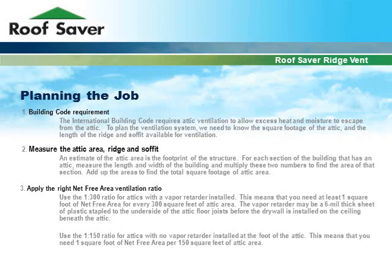Use the 1 to 300 ratio for attics with a vapor retarder installed. This means you need at least one square foot of net free area for every 300 square feet of attic area. The vapor retarder may be a 6mm thick sheet of plastic stapled to the underside of the attic floor joists before the drywall is installed on the ceiling beneath the attic. Use the 1 to 150 ratio for attics with no vapor retarder installed, meaning you need one square foot of net free area per 150 square feet of attic area.